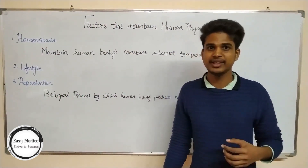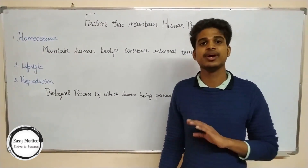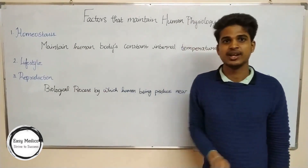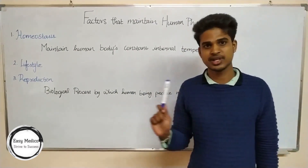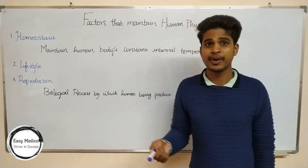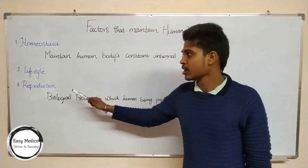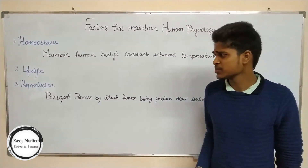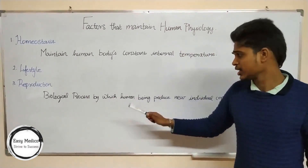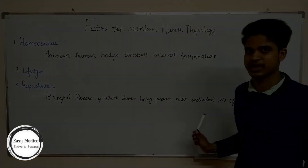If we maintain these three things in our body, we can be very healthy. Lifestyle mainly varies from person to person, but it mainly depends upon physiological activities. Reproduction is a biological process by which a human being produces a new individual or offspring.